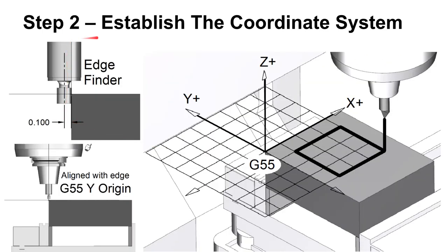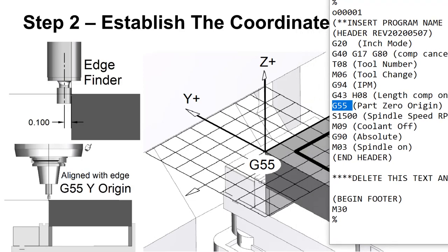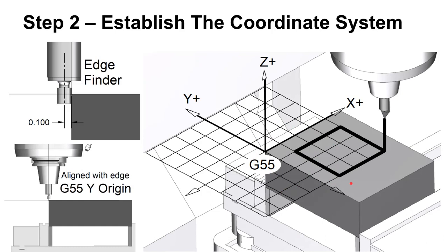G55 — and this could be anything G54 through G59 — tells the controller where the origin is. We've asked in our code for G55, and it's up to us to indicate to the setup person where G55 is on the machine. We've asked for it to be at this edge. The setup person will use an edge finder, which typically has a 0.2 inch diameter cylinder on the end, to touch off on that edge — 0.1 inches away from it.